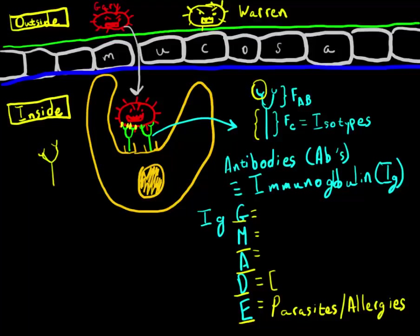IgD is a little bit of a mystery. It seems to be involved in the development of some cells, but not entirely clear that it protects us against a particular type of invader.